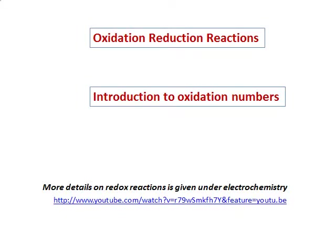Oxidation reduction reactions — we call them redox reactions. In this video, you will be learning about some oxidation reduction reactions and you will be introduced to oxidation numbers. Oxidation numbers are also called oxidation states. More detailed explanations and use of oxidation reduction reactions you will see under the topic of electrochemistry, or you can check the link given over there.